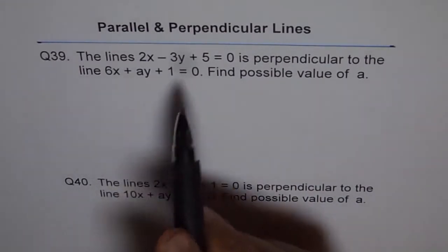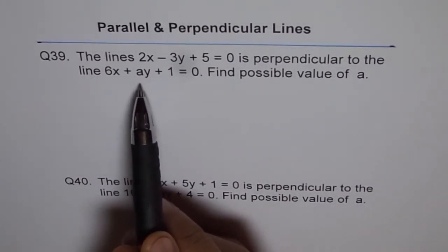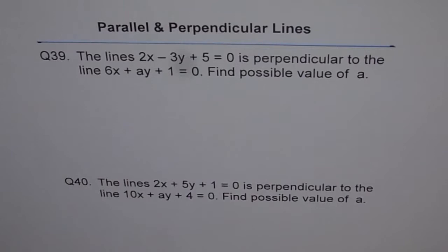We are given two lines and we have a parameter a here which is coefficient of y. We need to find the value of a which will make these two lines perpendicular. Let's write them in y equals mx plus b form. Find slope of both the lines and then the slopes should be negative reciprocal of each other.